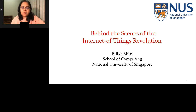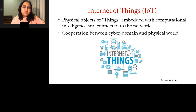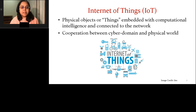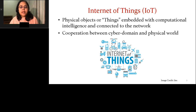Let me start with a brief introduction to what Internet of Things is. IoT refers to physical objects or things that are embedded with computational intelligence and connected to a network. Your smart light, smart phone, smart watch — these are objects that you don't think of as computers, but inside them there is a computing element that collects data and takes action. This creates a cooperation between the cyber world — the computing systems — and the physical world.